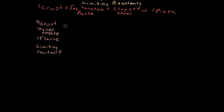I want to talk about limiting reactants. Limiting reactants go hand-in-hand with stoichiometry. We learned that in a balanced equation — like talking about the ingredients to make a pizza — we can use the ratios between ingredients.